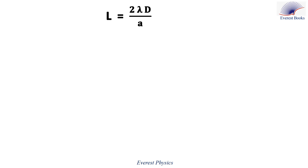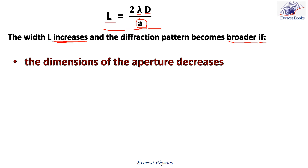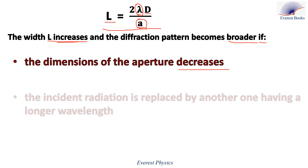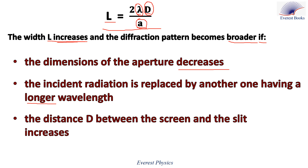By referring to the viewing screen, we can conclude that when the linear width of the central bright fringe increases, the diffraction pattern becomes broader. Since a is in the denominator, L increases if the width of the aperture decreases. Since lambda is in the numerator, L increases if the incident radiation is replaced by one with a longer wavelength. Similarly, since D is in the numerator, L increases if the distance D between the screen and the slit increases.